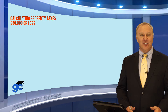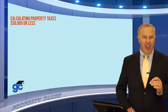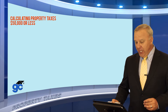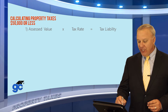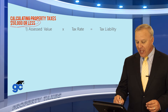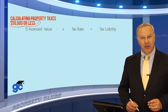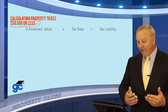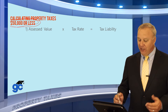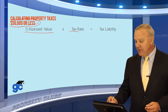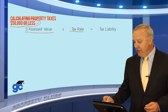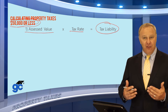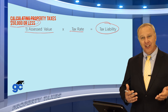In this section, we'll talk about property taxes and specifically the three ways that property taxes are calculated using the different homestead exemptions. To figure out property taxes, what you typically would do is take the assessed value of the property times the tax rate. That would give you what's called the tax liability or the taxes due. If you had no exemptions on the property, then this is all you would have to do to calculate the amount of tax due.